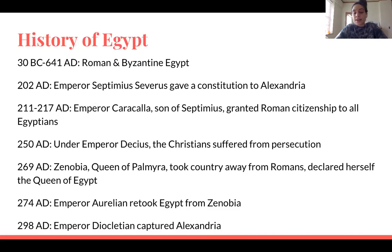In 269 AD, Zenobia, who was Queen of Palmyra at the time, took Egypt away from the Romans and thus declared herself the Queen of Egypt. But then in 274 AD, Roman Emperor Aurelian retook Egypt from Zenobia, the Queen of Palmyra. And then in 298 AD, Roman Emperor Diocletian captured Alexandria, Egypt. And that is just what occurred probably around the time that Diophantus was alive.